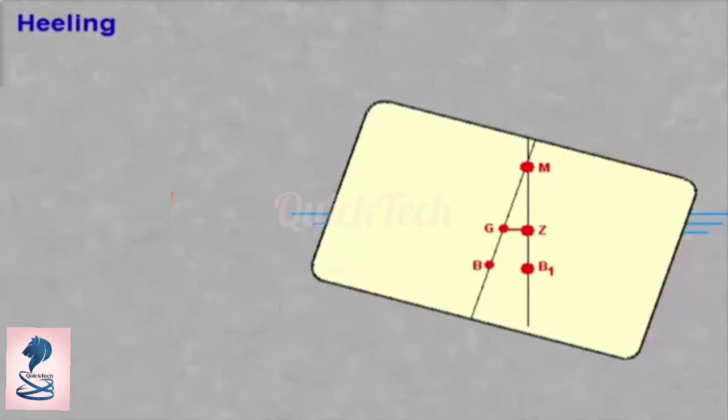If the ship heels, the centre of buoyancy B moves to B1 because the shape of the underwater hull is changing. The force working at B1 is still vertical and straight through the metacentre M.